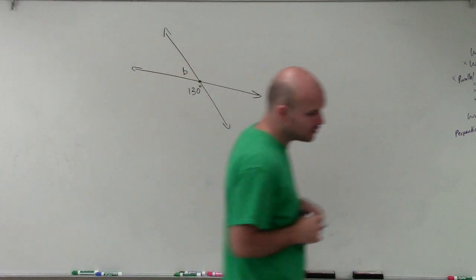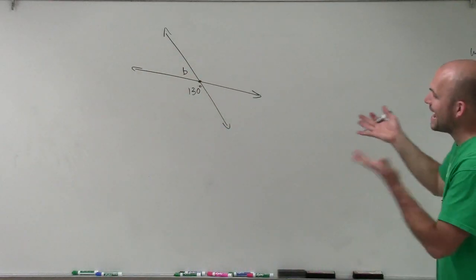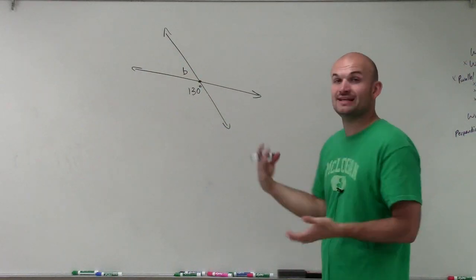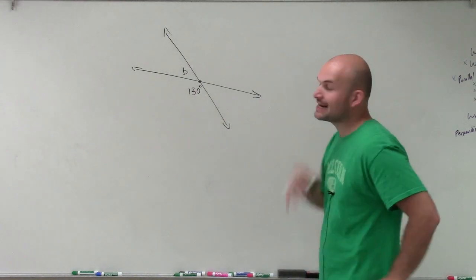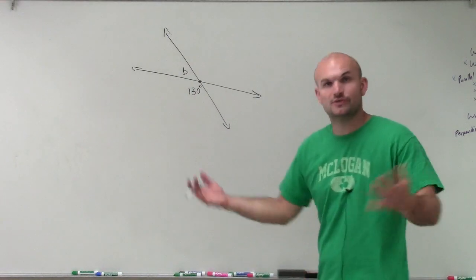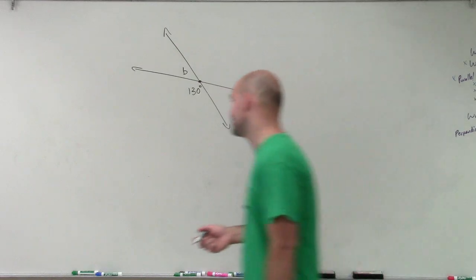Welcome. So what I'd like to do is show you how to find the angle of B when given an intersection of two lines and one angle of 130. So I'm going to do this in two different ways, by using two different definitions.